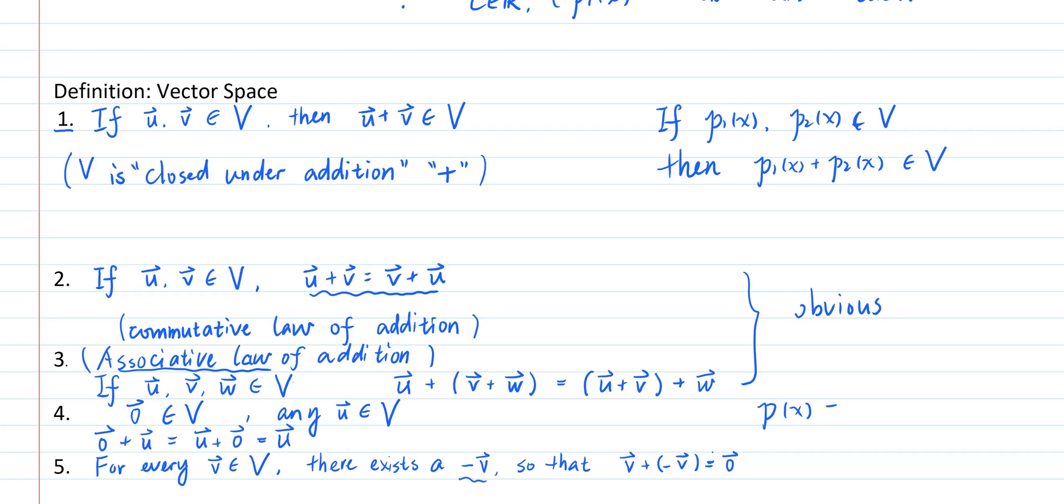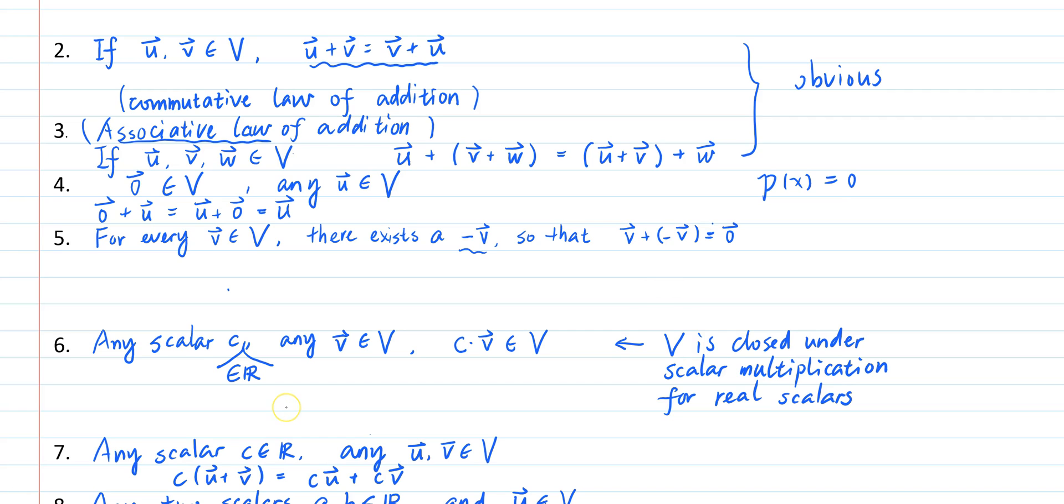For the fourth property, notice that the zero polynomial is still a polynomial of degree 2 or less and serves as the zero vector of this set. For the fifth property, notice that for every polynomial c0 + c1*x + c2*x^2, we can define a negative of that polynomial as -c0 - c1*x - c2*x^2. And the sum of a polynomial with its negative is always going to be the zero polynomial.